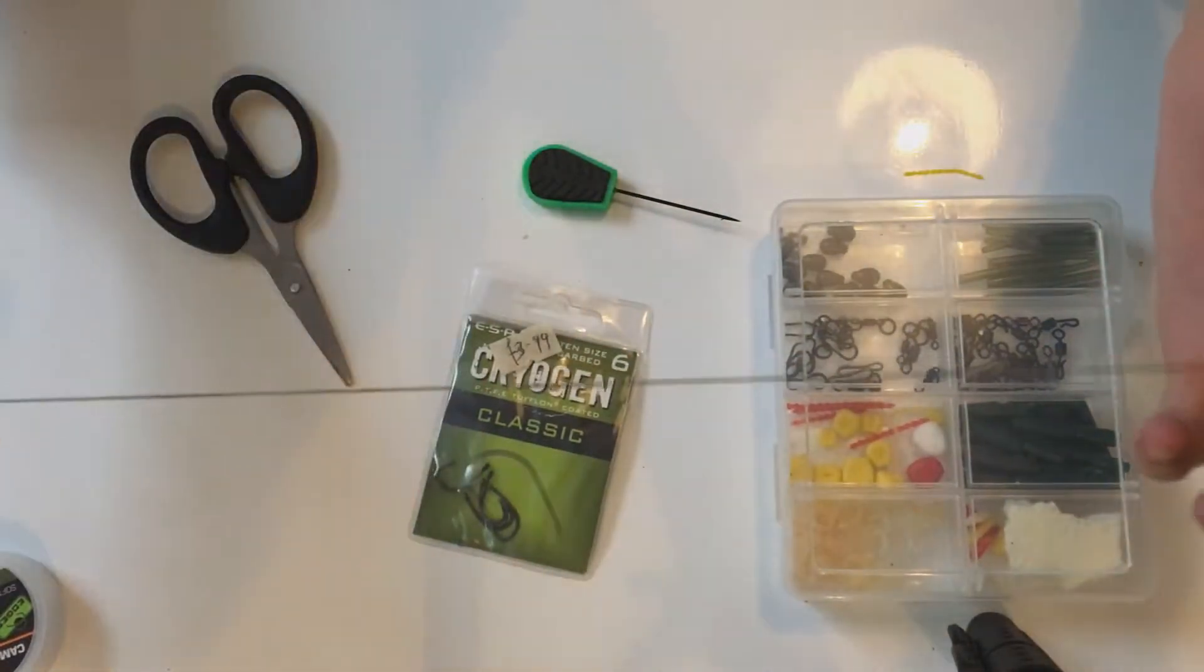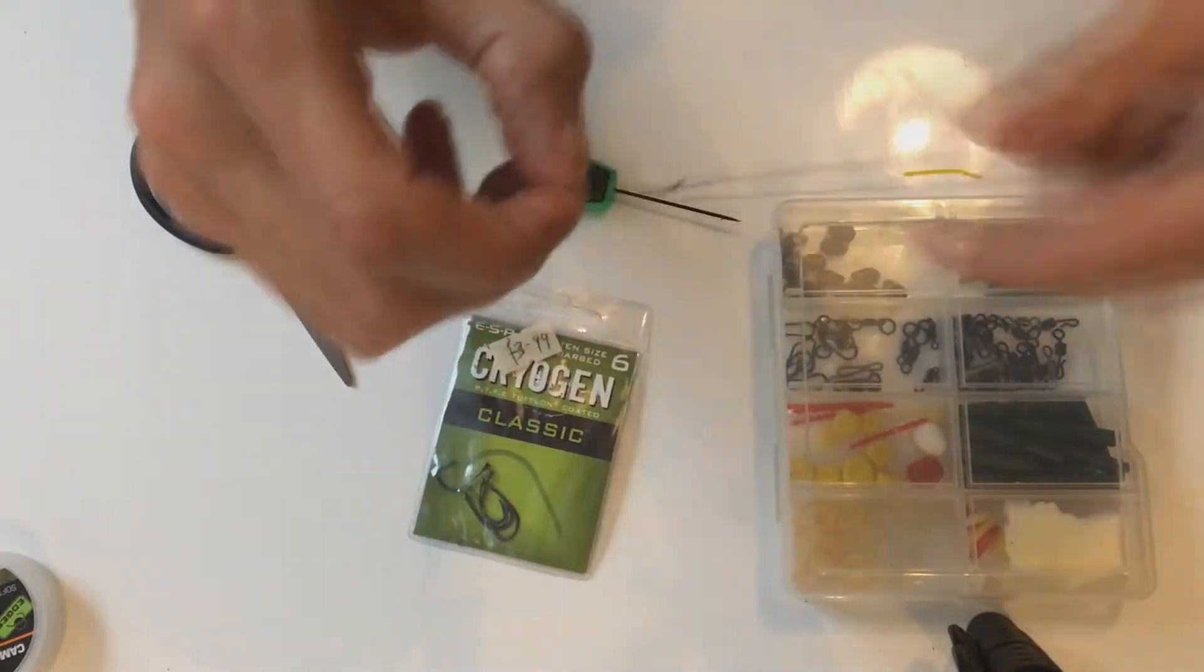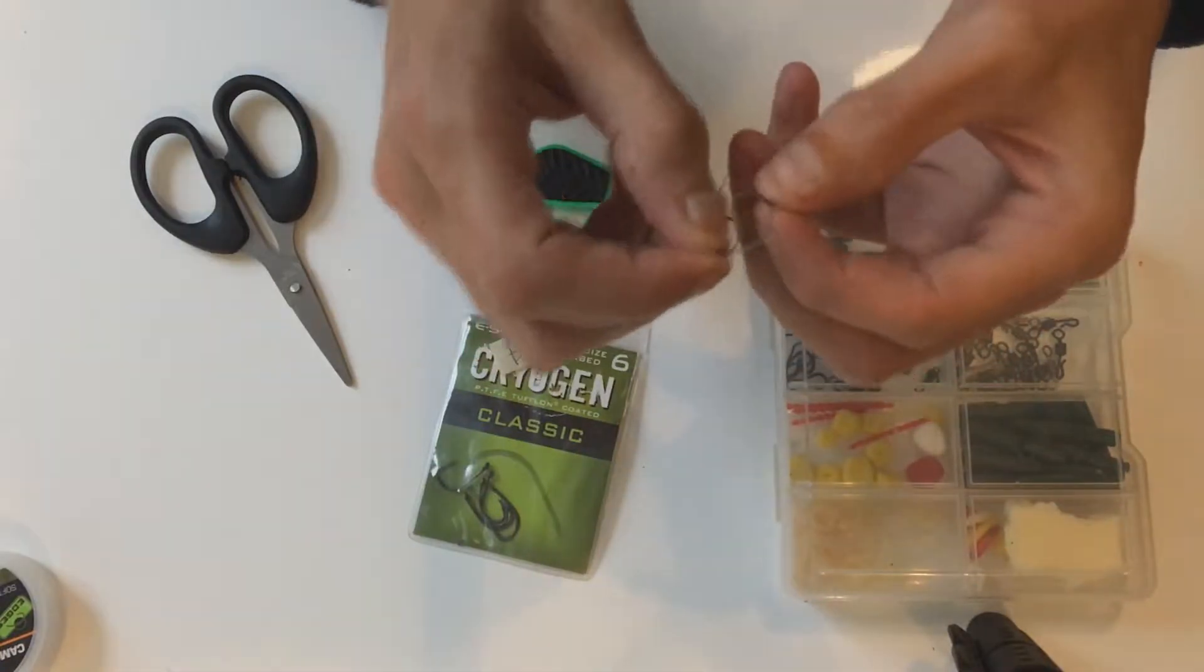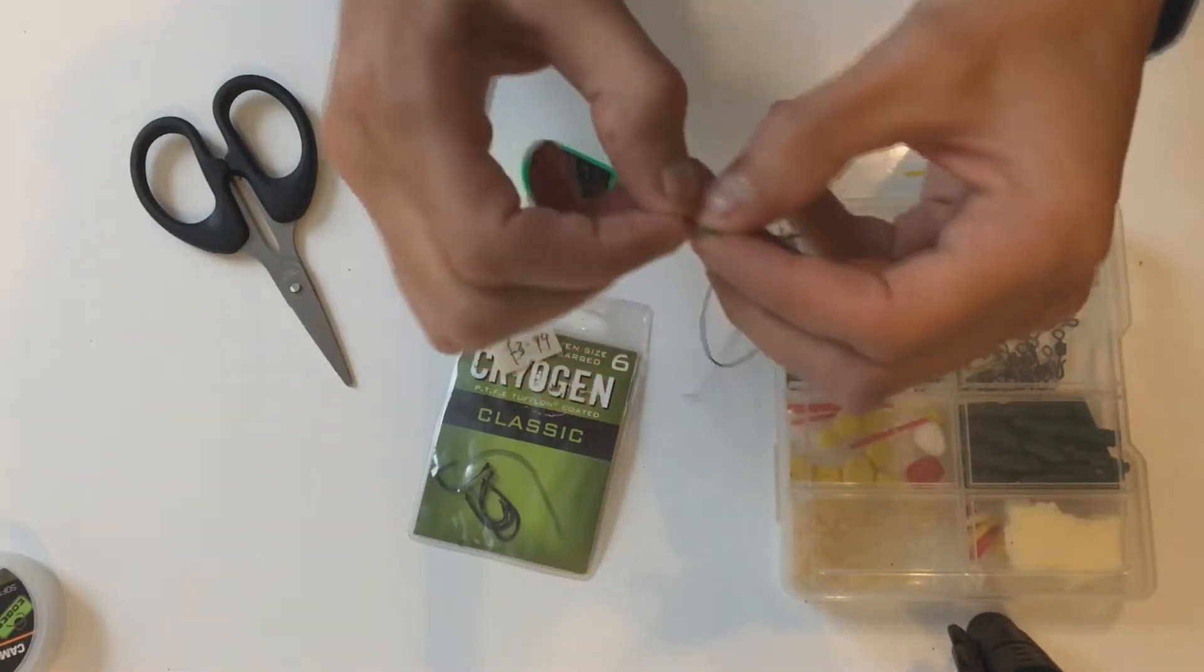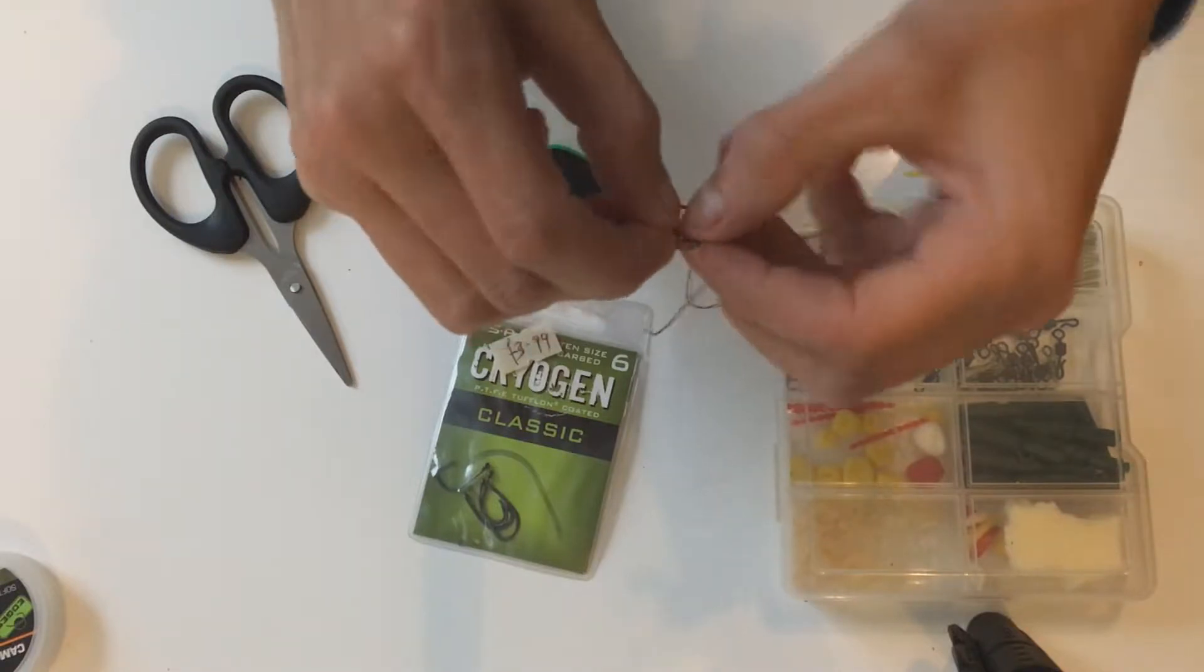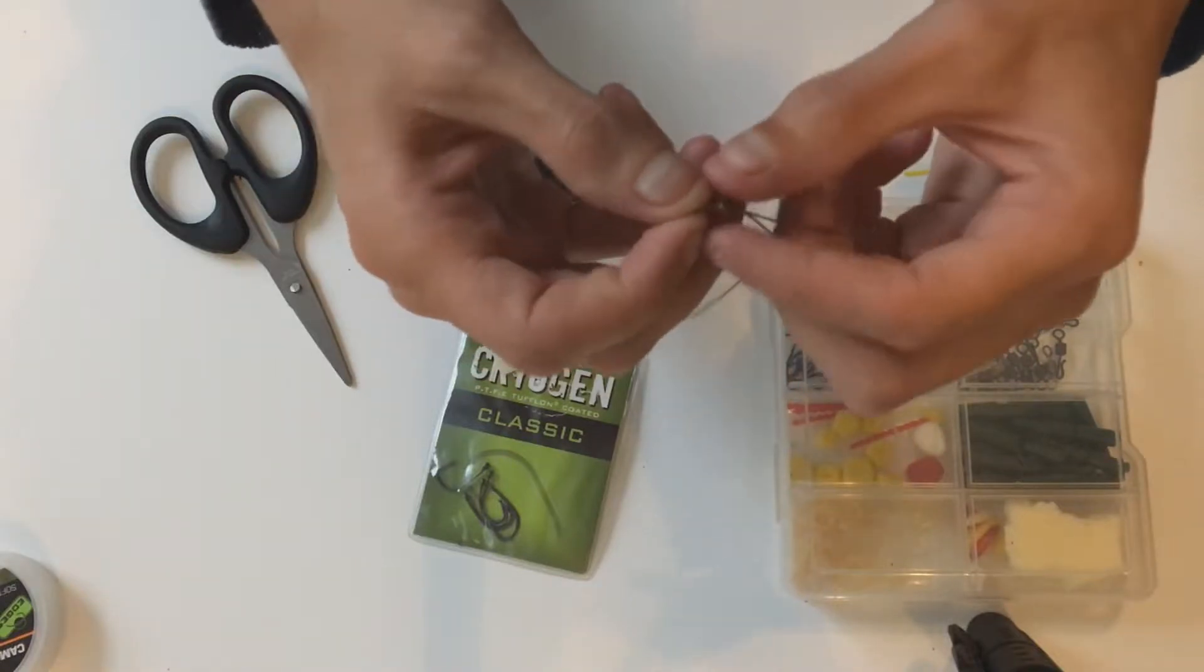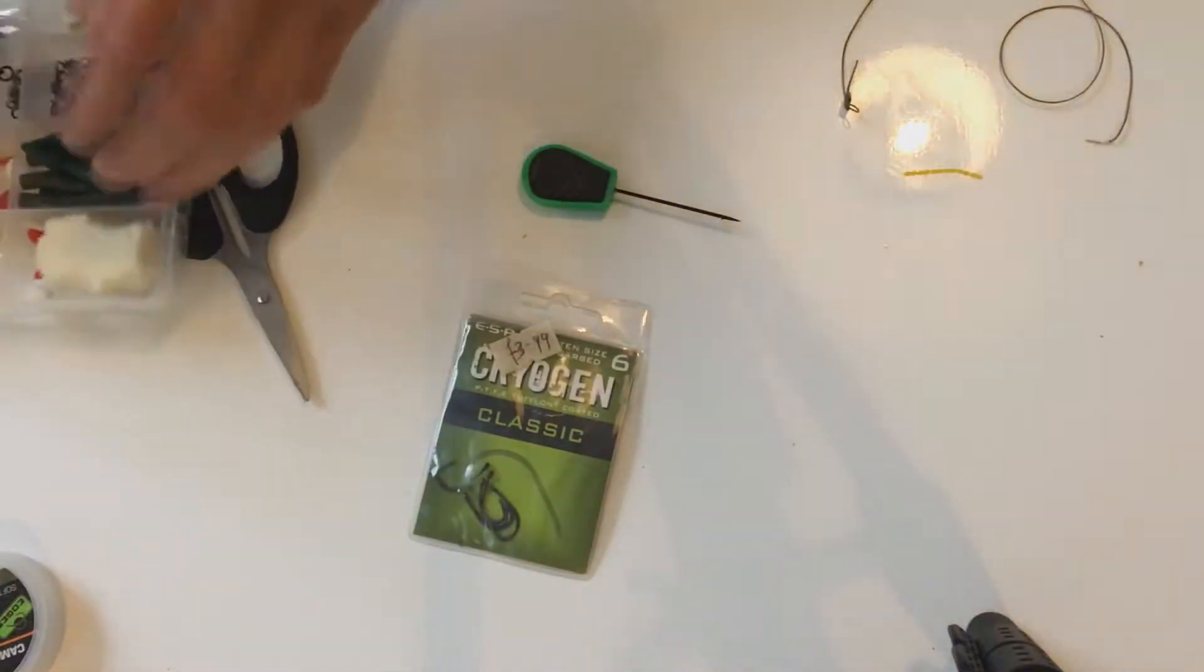We're going to take off roughly 18 inches. So I'll get that cut. And to start with we're just going to tie a simple overhand loop to create the hair. Like so, push that through. Normally I would use a baiting needle for this because it can be quite fiddly.